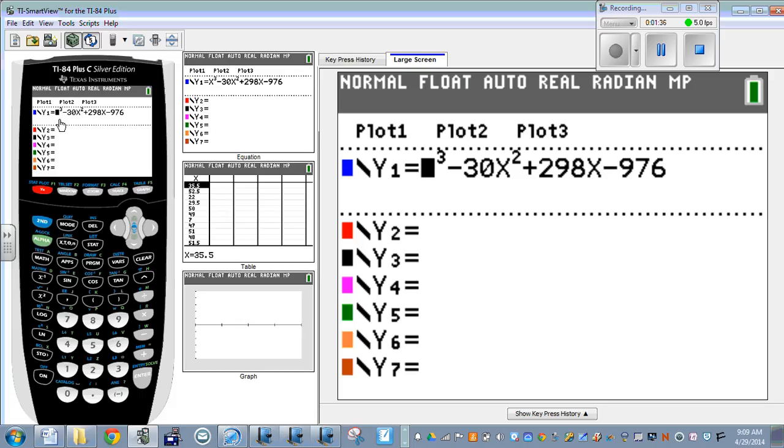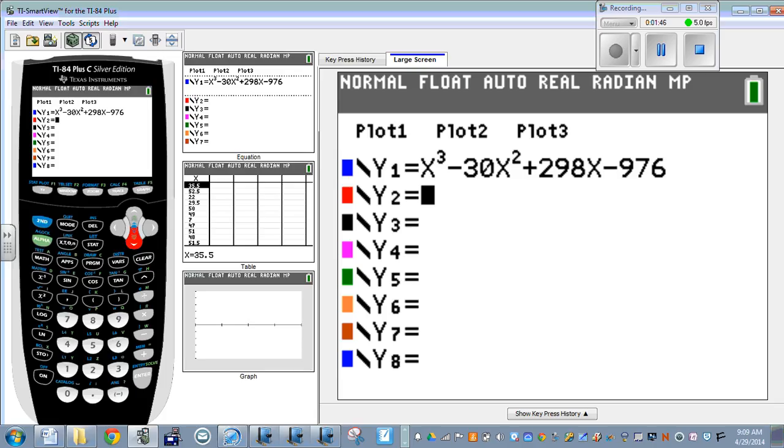If you notice up here, I turned off this equation. There's no bold on the equal. So if you go to the equal and hit enter, that will no longer be highlighted because I'm not going to graph that function. I want to graph the derivative of that function.